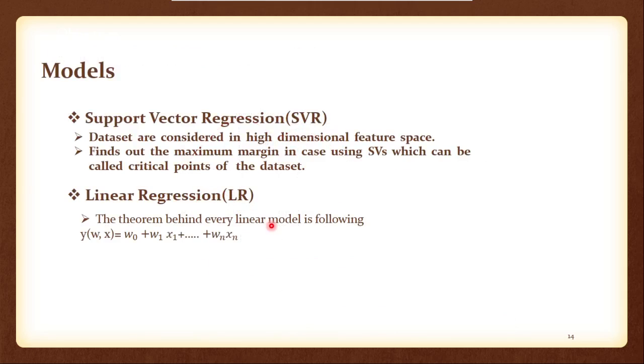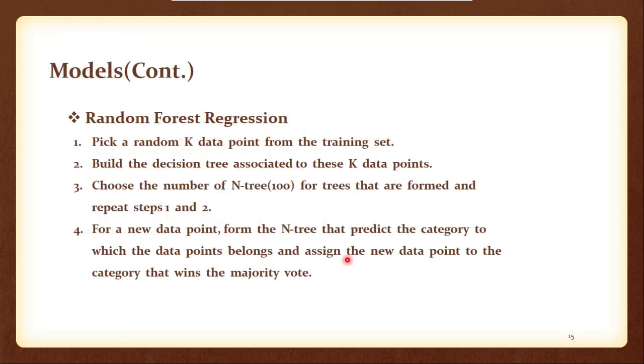And now the models. Previously I mentioned we have used four types of models. First one, Support Vector Regression which is called SVR, where the data sets are considered in high dimensional feature space and then we generally find out the maximum margin. The second one, Linear Regression - the common one - the mathematical expression just like this. And then Random Forest Regression where we generally pick random K data points, then build the decision tree, then we choose let's say 100 trees and repeat the first and second process, then we generally perform majority voting and assign new data points. So this is the Random Forest Regression model's algorithm.